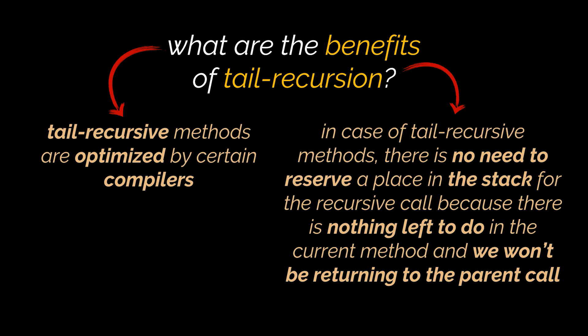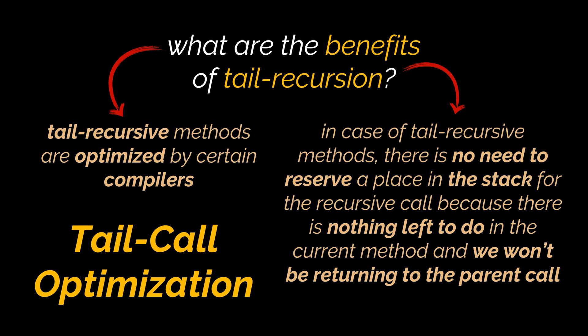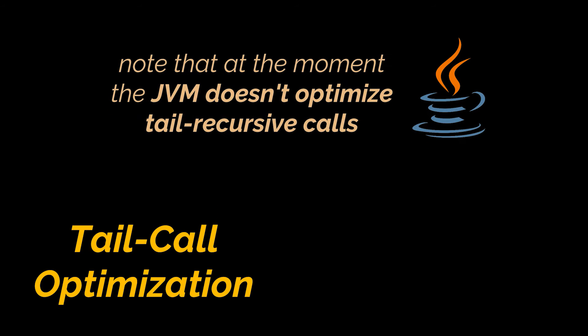Because there is nothing left to do in the current method and we won't be returning to the parent call, this is referred to as tail call optimization or elimination. Now although the Java compiler can make use of this optimized memory, you should note that at the moment the JVM doesn't optimize tail recursive calls.